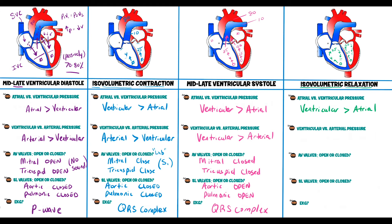Because ventricular pressure is still greater than atrial pressure, the mitral and tricuspid valves stay closed — no sound is produced. Meanwhile, the aorta is filling with blood, maintaining pressure around 80 mmHg, and the pulmonary trunk around 10 mmHg. As ventricular pressure continues to drop toward zero, it falls below the arterial pressure.